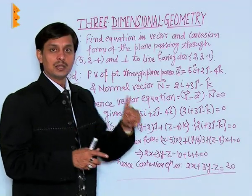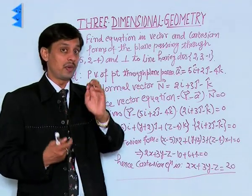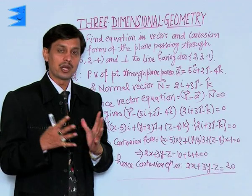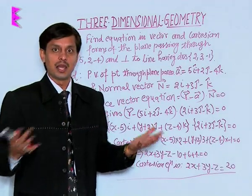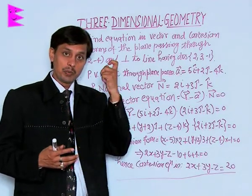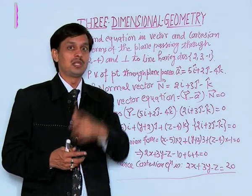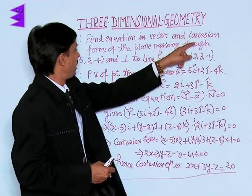You know that the position vector of any point is what? If we put i, j, k and add, then it becomes the position vector with respect to the origin. Our plane is passing through (5, 2, -4) so its position vector will be 5i + 2j - 4k with respect to the origin.